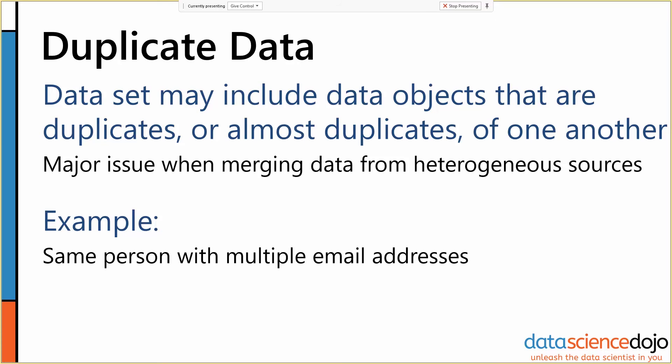Generally speaking, duplicate data is pretty easy to handle, assuming you can detect it properly—get rid of the duplicates and merge it together. But if you've got data that's heterogeneous, from multiple sources, then you do have to be really careful about filtering out your duplicates.